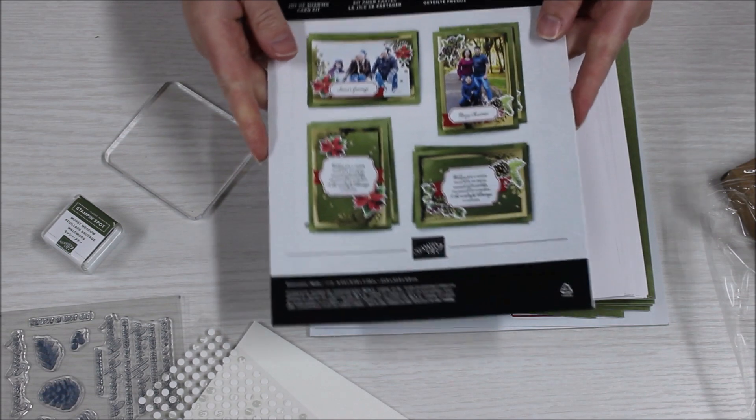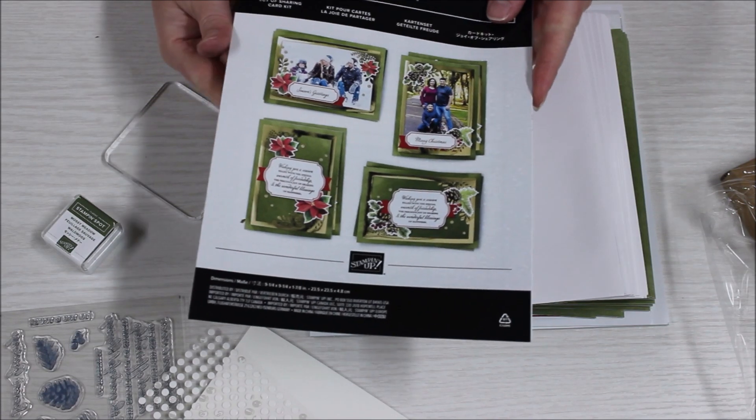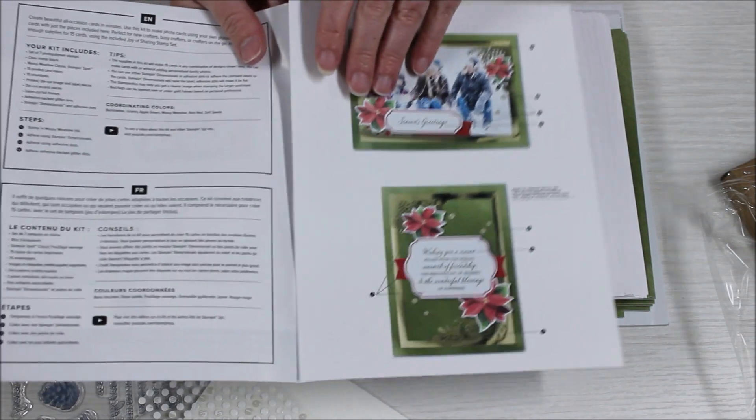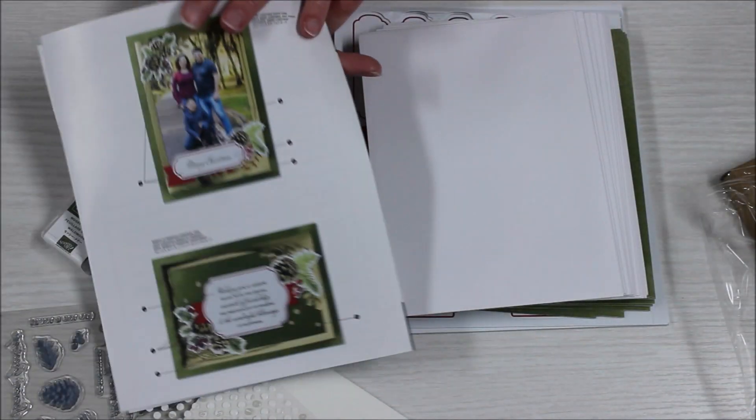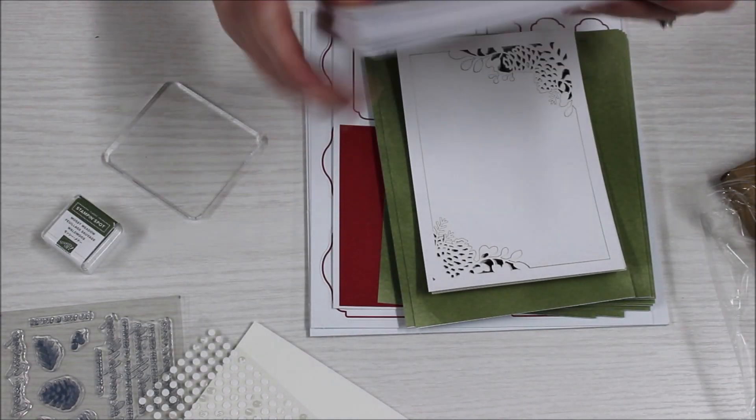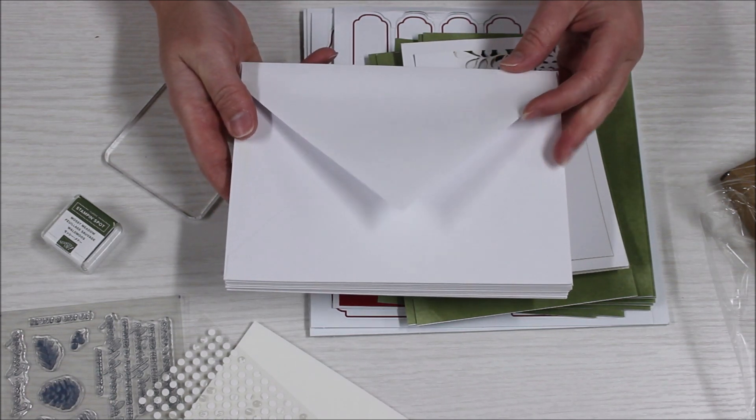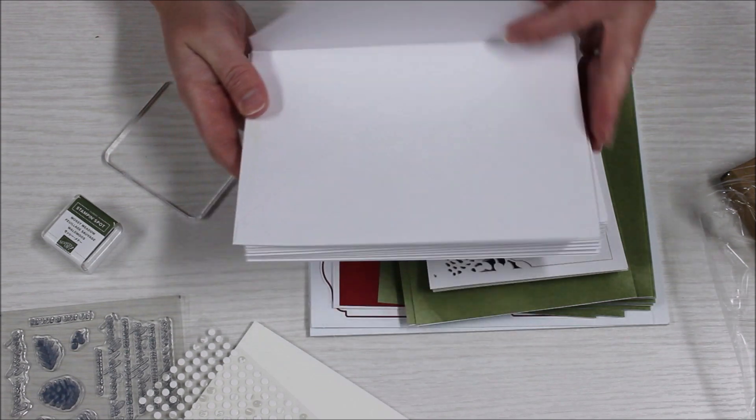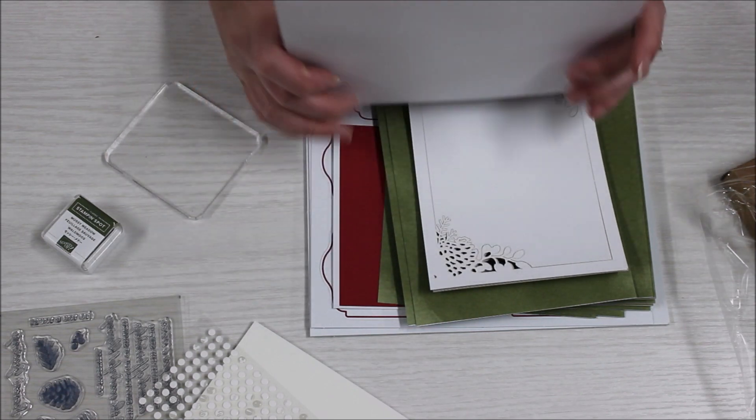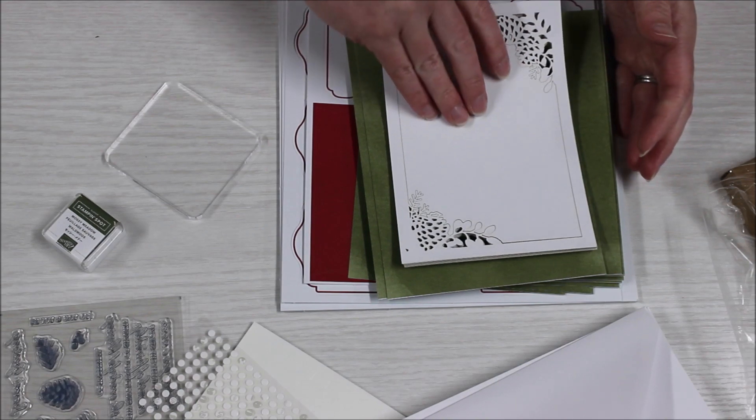You can either go off the front picture, which is what I typically do because I'm more of a visual person, or if you prefer to read instructions, those are provided too. Again, this card kit makes 15 cards. These are a little bit larger than your regular medium envelopes, and the envelopes are all Whisper White, so you can decorate with the stamps and ink to dazzle them up or leave them as is.